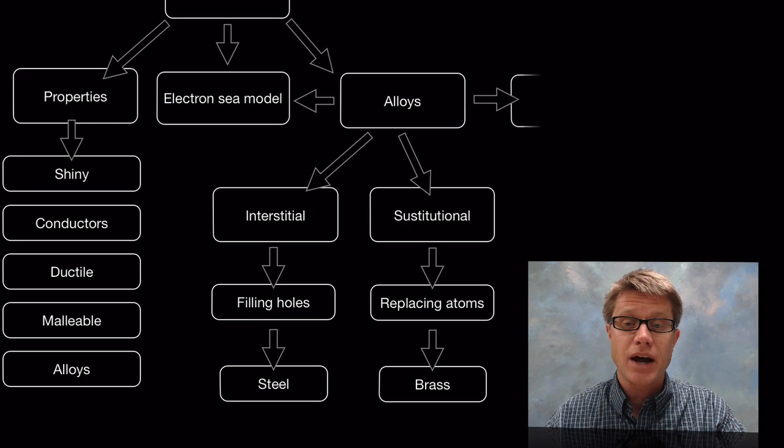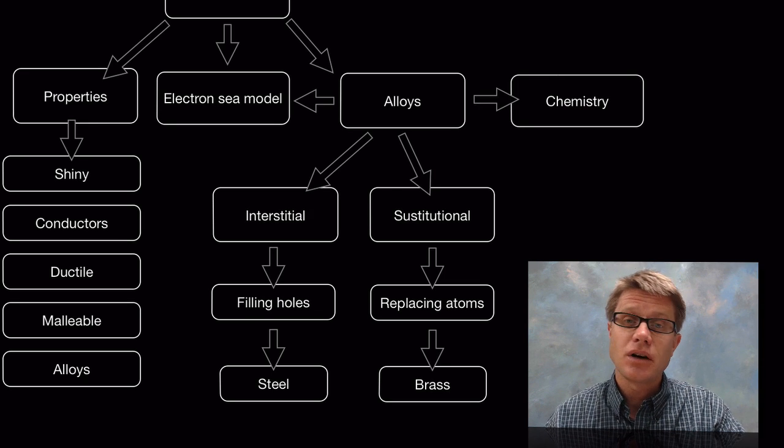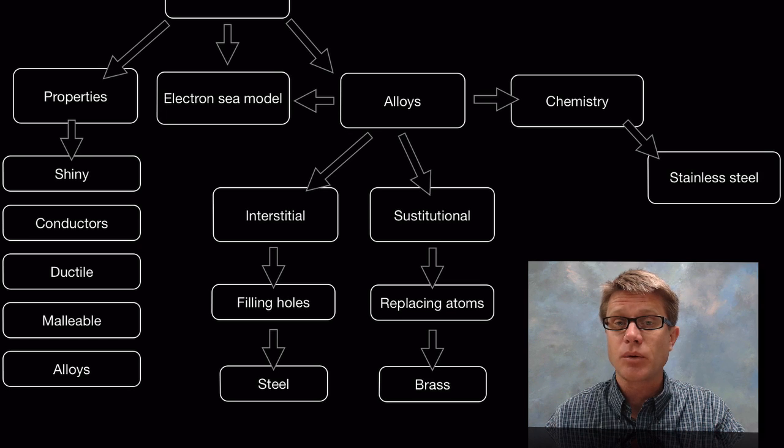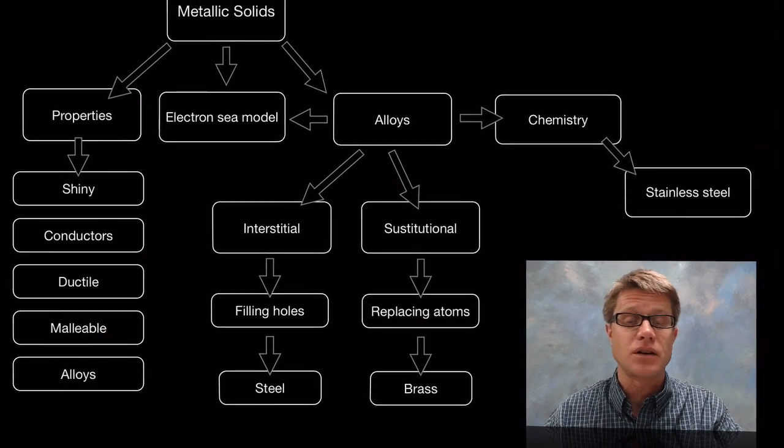An example could be brass. And so the chemistry of alloys can sometimes differ. And so when we're making stainless steel for example we can make steel that doesn't rust because of the different atoms that we're adding.